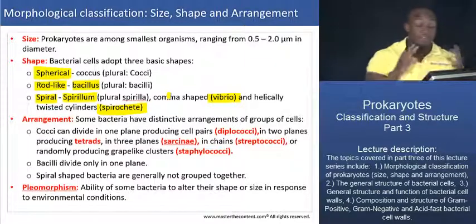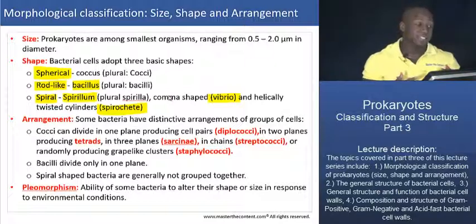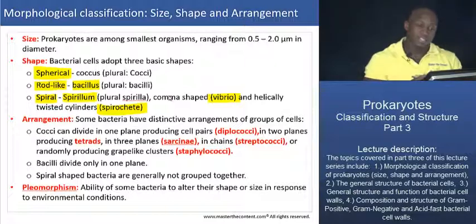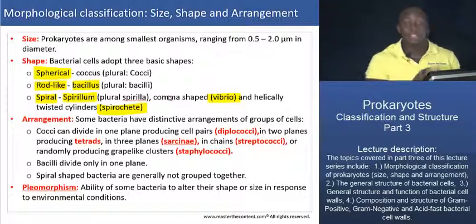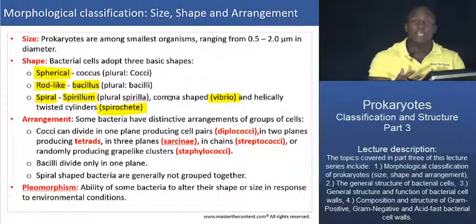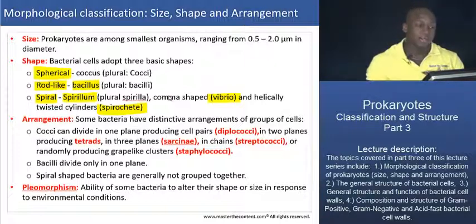As far as their arrangement is concerned, this is where things start to get interesting, because bacteria tend to have very distinct arrangements or groupings of cells. Cocci are usually round, but they can actually be oval-shaped, somewhat elongated, or even flattened somewhat. So for a bacterium that's supposed to be spherical, it can adopt a variety of shapes that would cause you to see it as something else.